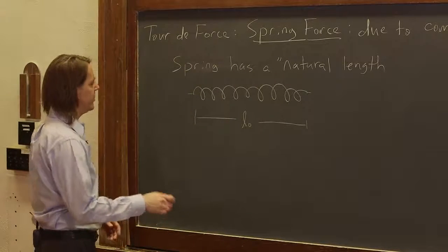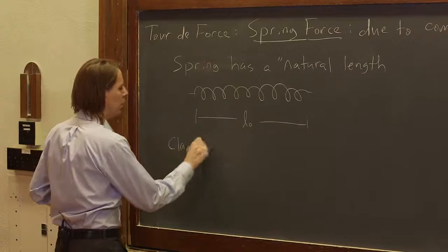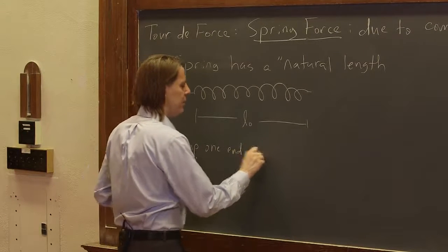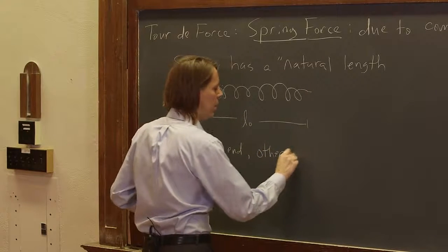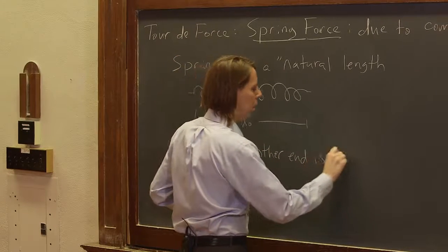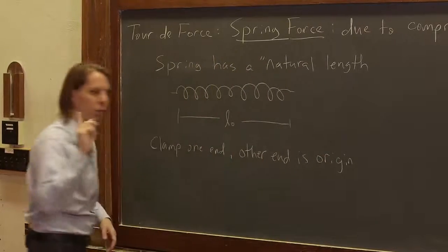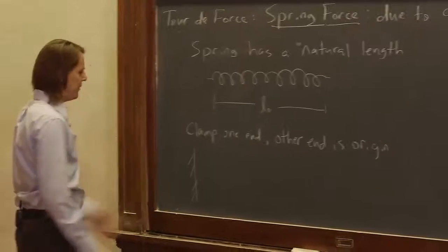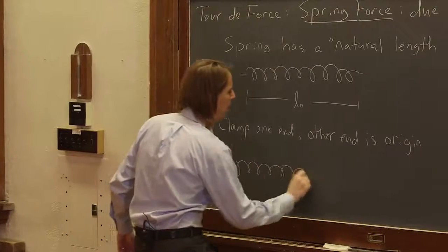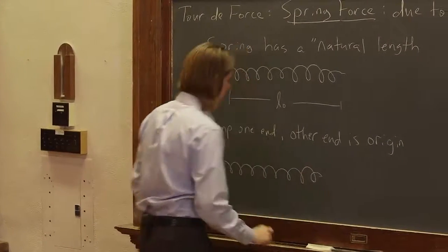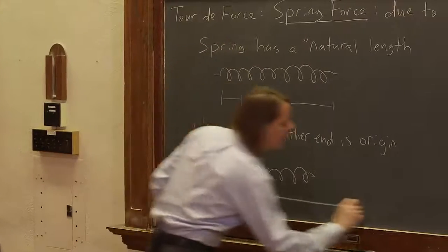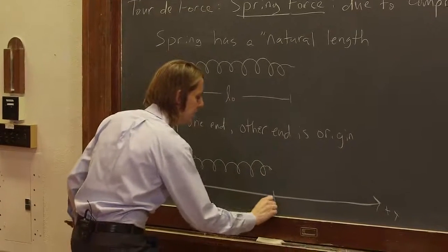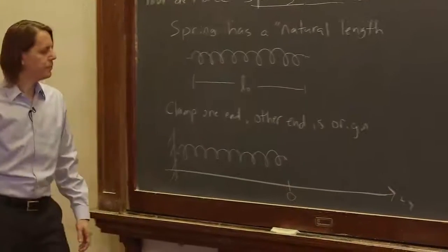Now, if you take a spring like that and clamp one end and the other end is the origin, we always draw our problems in physics. So we would draw it and say there's a heavy wall, that means the clamped end. And here's our other end, and if I said the origin, I must mean to draw an axis, x-axis. And here's the end we're going to attach things to, and that must be the origin.